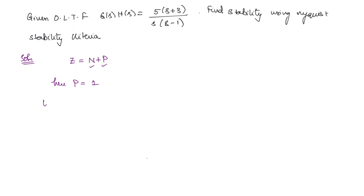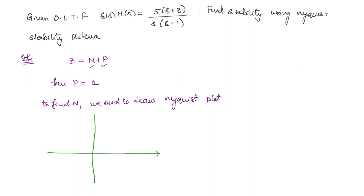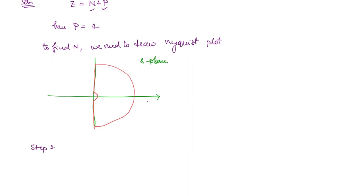Now we have to find N. To find N, we need to draw the Nyquist plot. In order to draw the Nyquist plot, we first have to start with the Nyquist path in the s-plane. You can see that there is one pole at the origin, so you have to take a slight detour. We can start from Step 1: draw the polar plot, meaning for omega varying from 0 to infinity. For that, GH is equal to 5(s+3) divided by s(s−1).